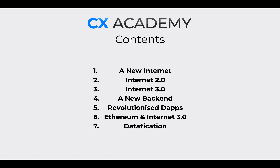The contents of this module: we're going to talk about this new type of Internet and what that really means. We'll discuss Internet 2.0 (the current Internet), Internet 3.0 (the decentralized version), a new backend — essentially the code behind the functionality of Internet 3.0 — and revolutionized decentralized applications. Then we'll link it all together with Ethereum, a company with their own cryptocurrency. Finally, we'll touch on a new phrase you may never have heard before: datafication, which we'll link to a later module in the blockchain subject.